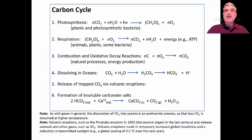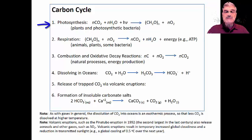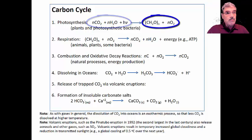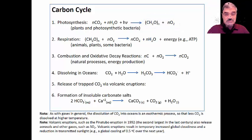But first let's talk about the carbon cycle — the various processes that can either produce or consume carbon dioxide. Let's begin with the very important one: photosynthesis, probably the most important process that occurs on planet Earth. In photosynthesis, carbon dioxide plus water plus energy from the Sun forms a carbohydrate — a hydrate of carbon such as glucose — and oxygen.